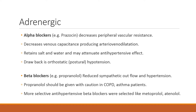Beta blockers — the well-known one is propranolol — reduce sympathetic outflow and are majorly used in hypertension. Propranolol should be given cautiously in patients with asthma or COPD because it blocks beta receptors non-specifically, potentially precipitating asthma or COPD conditions. More selective agents like metoprolol and atenolol are used, reducing the disadvantage of precipitating asthma.